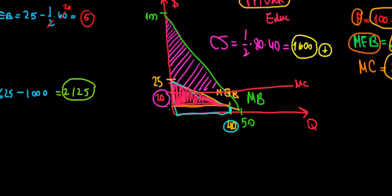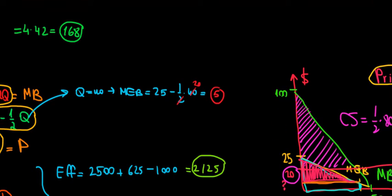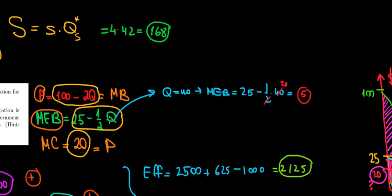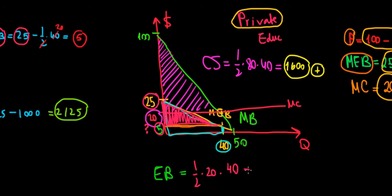We know the marginal external benefit function is 25 minus one-half Q. If quantity equals 40, then the marginal external benefit equals 25 minus one-half times 40, which is 25 minus 20, equal to 5. So the marginal external benefit at 40 units is $5. The area of the triangle is one-half times the height of 25 minus 5, which is 20, times the length of 40.